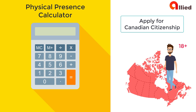To be eligible for Canadian citizenship, you must have been physically present in Canada for at least 1095 days in the 5 years immediately before the date of your application. We encourage you to apply with more than the minimum requirement of 1095 days of physical presence to account for any miscalculations of absences.